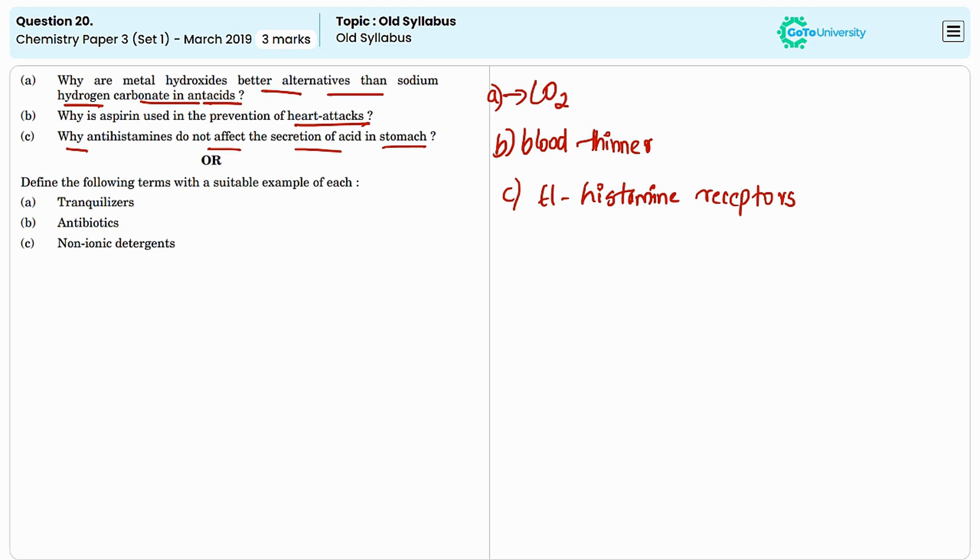However, the secretion of stomach acid is regulated by H2 histamine receptors which are found in the stomach lining. Histamine stimulates these H2 receptors to promote acid production.